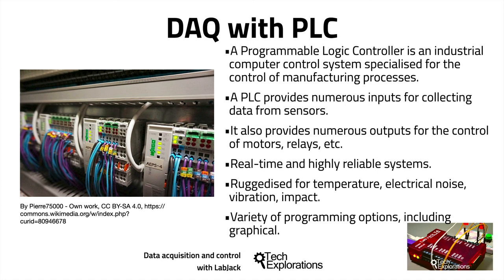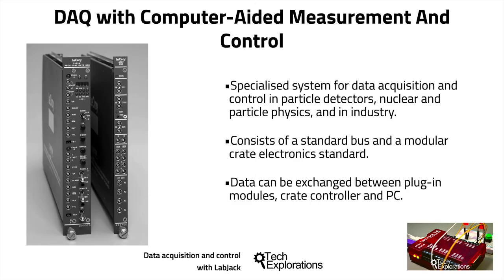Let's have a look at another example of hardware used in data acquisition. Here is a Computer-Aided Measurement and Control System, or CAMAC. I decided to include CAMAC in this discussion because it's representative of a hyper-specialized system designed for applications with very high data acquisition rates - the kinds of rates found in large science experiments such as particle detectors and nuclear and particle physics labs. The newer versions of this technology are capable of transferring 24-bit data words every 450 nanoseconds or even faster.